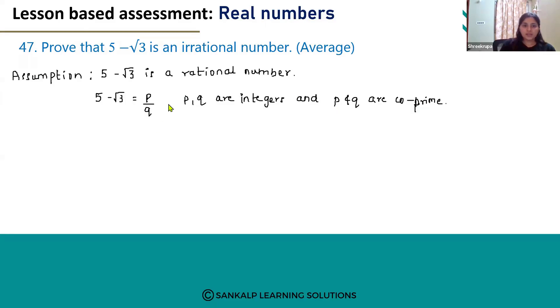Let's take this as equation 1. We have to subtract 5 from equation 1. We will get 5 minus root 3 minus 5 is equal to p by q minus 5.